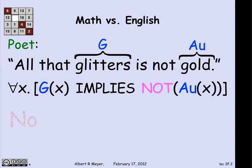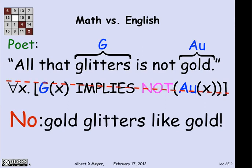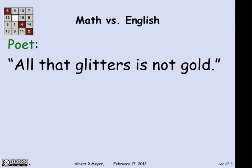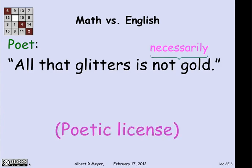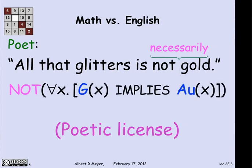It's clearly false, because gold glitters like gold, and you can't say that gold is not gold. So this is not what's meant — it's not a good translation. What is meant? When the poet says "all that glitters is not gold," he's really leaving out a key word to be understood from context: "not necessarily gold." He's using poetic license. The proper translation would be: it is not true that everything that glitters is gold — it is not the case that for all x, if x glitters, then x is gold. A literal translation, without thinking about what the sentence means and what the poet intended, gets you something that's nonsense. It's one of the problems with machine translation from natural language into precise formal language.